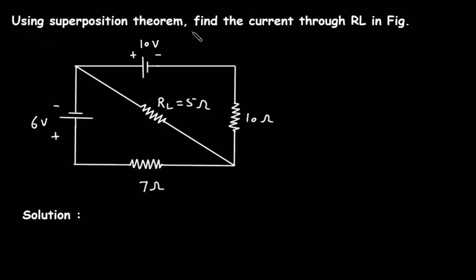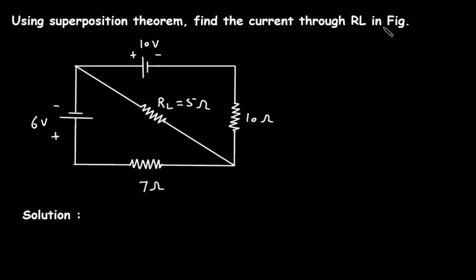Using superposition theorem, find the current through RL in the figure. We have to find the current through RL using the superposition theorem.